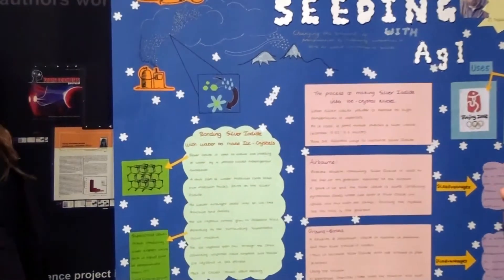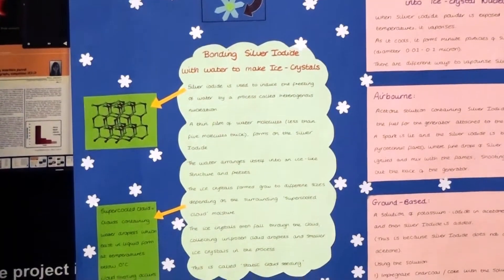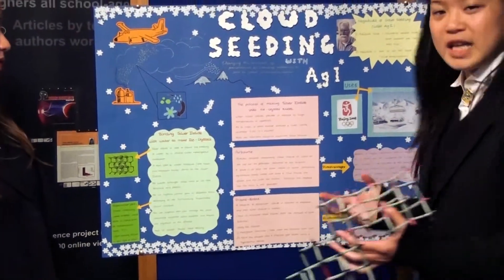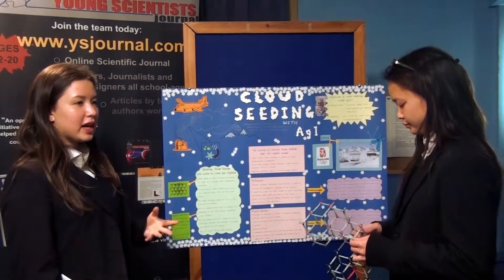Silver iodide is used because it has a very similar structure to ice, as you can see here. Basically, a thin film of water molecules goes onto the silver iodide crystal and orientates itself to form an ice structure before it freezes. This serves as a condensation nuclei which other water droplets then join onto, and it gets heavy enough and then it snows or rains. Cloud seeding occurs in supercooled clouds, which are clouds that have water in liquid form under zero degrees Celsius.